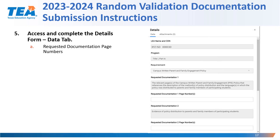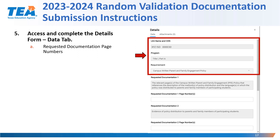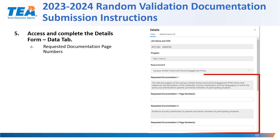Once you've clicked on the initial submission line, you will now be able to access and complete the details form data tab. On the details form, the first thing you're going to see is the LEA name and CDN number, the program, and the requirement that the LEA was selected for. Below that is a section for the requested documentation. In the requested documentation one page numbers field, that's where you'll list the page numbers of the documentation file that correspond with the first requested documentation.